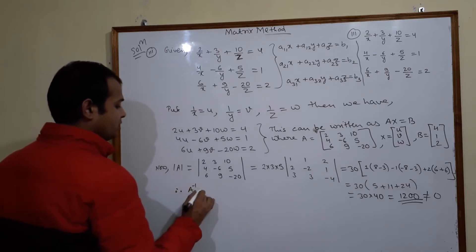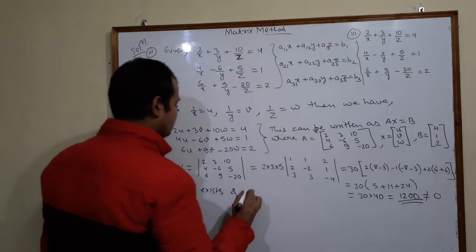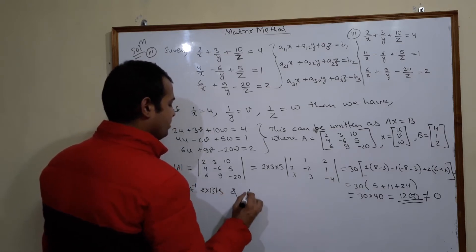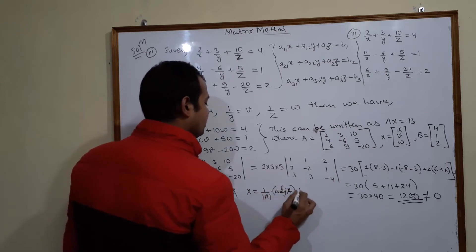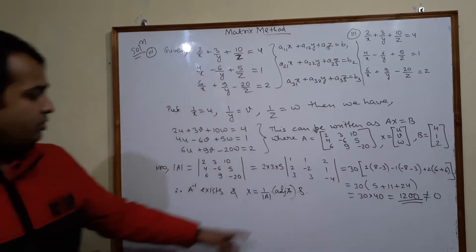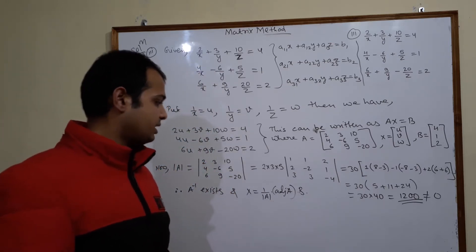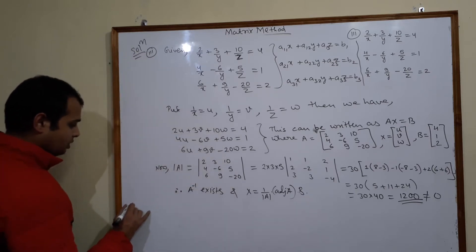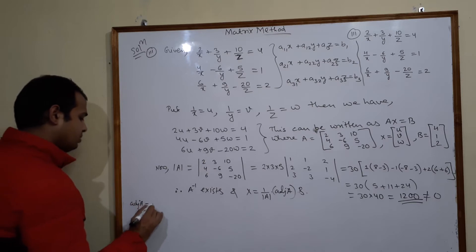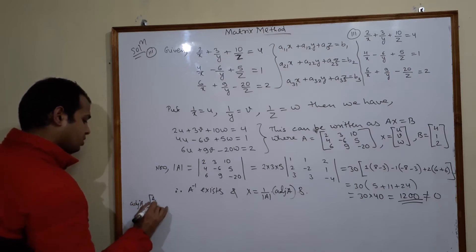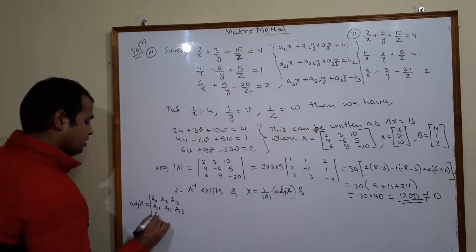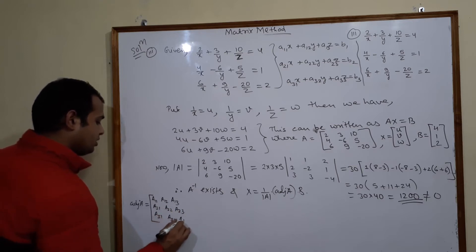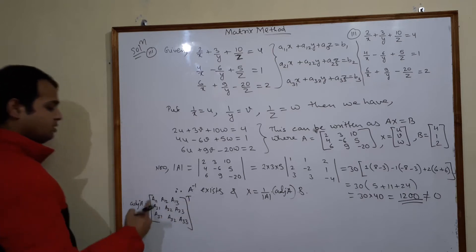The determinant is 1200, which is not equal to 0. Therefore A inverse exists, and X = (1/det(A)) × adj(A) × B. Now we need to find the adjoint of A, which is the transpose of the cofactor matrix [A11, A12, ..., A33].